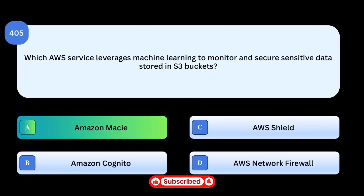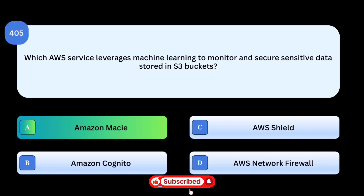Correct answer: Amazon Macie. Amazon Macie uses ML to discover and classify sensitive data in S3 buckets and helps maintain compliance. Why others are incorrect: Amazon Cognito manages authentication and user sign-in, not data discovery. AWS Shield protects against DDoS attacks, not S3 data. AWS Network Firewall provides network-level protection, not S3-specific security.